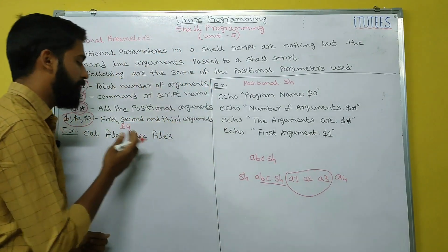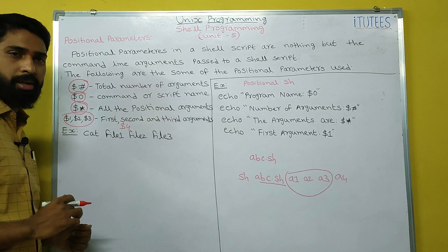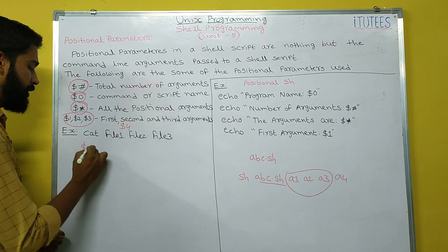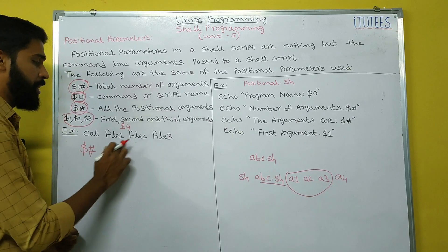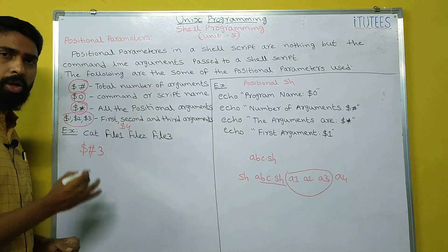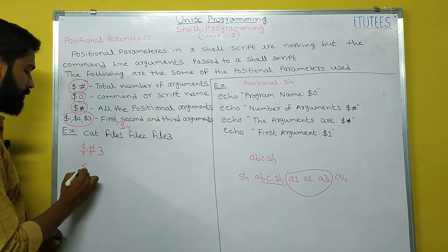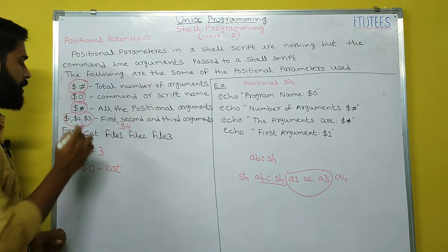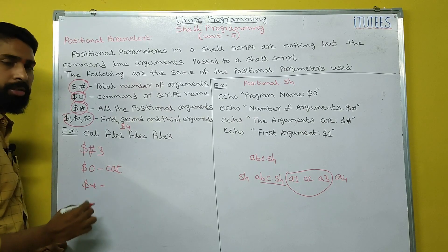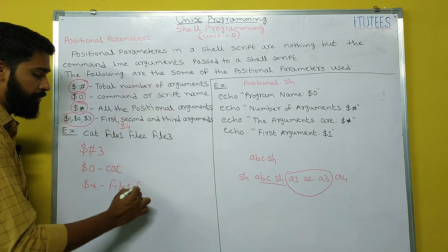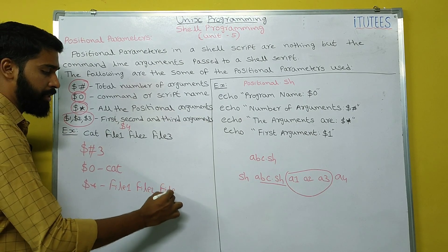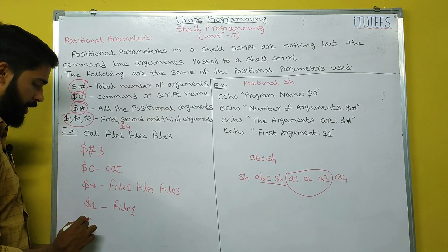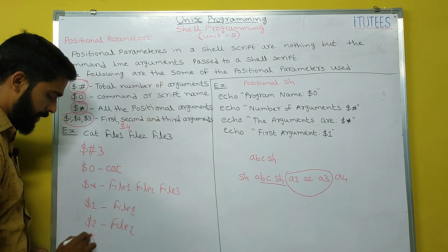This is another example: cat file1 file2 file3. So what is dollar hash? The dollar hash indicates total number of arguments — how many arguments here? Three. Similarly, dollar 0 is the command or script name — what is the command name here? cat. Dollar asterisk means all the arguments: file1, file2, and file3. Dollar 1 means file1, dollar 2 means file2, dollar 3 means file3.